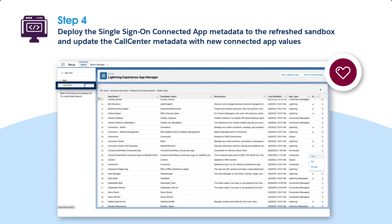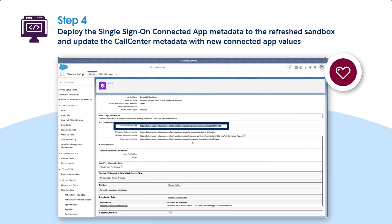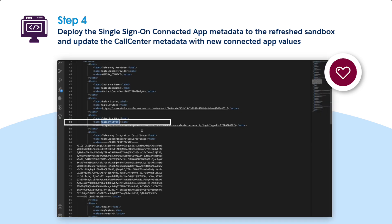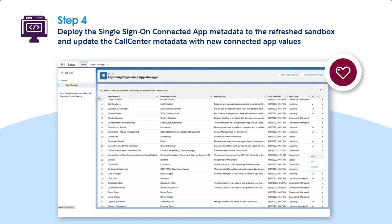Second, go to Setup, App Manager. Click Manage next to the newly deployed connected app and copy the IDP-initiated login URL. This value is the rec-identity URL. Replace the value of rec-identity URL in the XML file with the copied value. Third, give users access to the single sign-on connected app using permission sets or profiles.